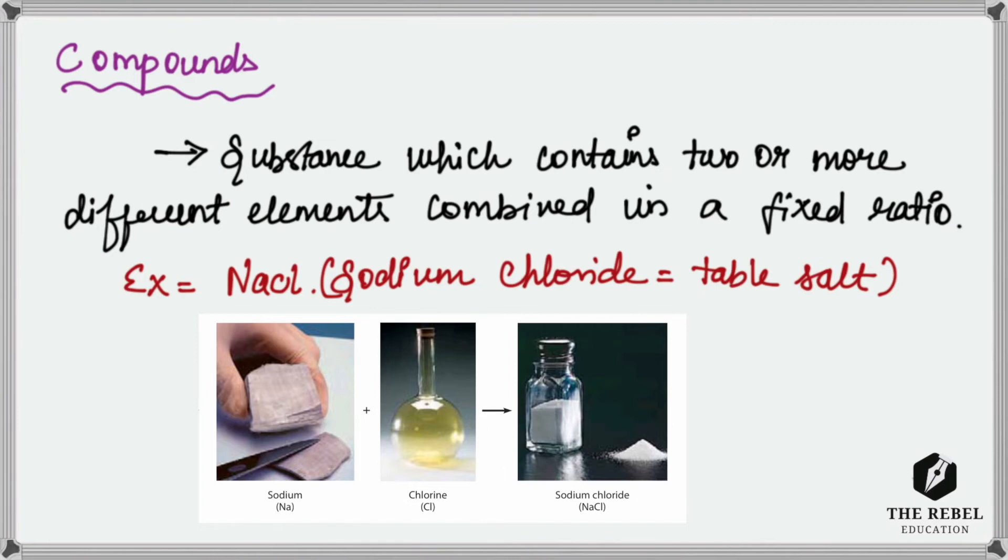When sodium and chlorine combine together, they form ionic bonding and become sodium chloride. It's a very interesting thing because a metal and a gas combine together to form an edible table salt which is consumed by human beings and other animals.